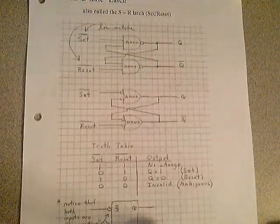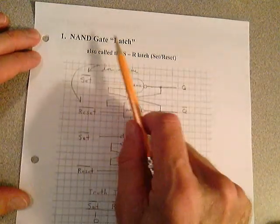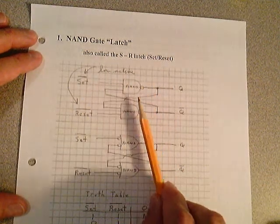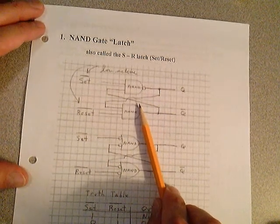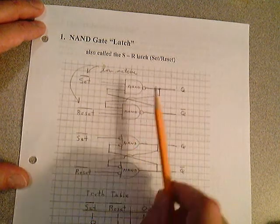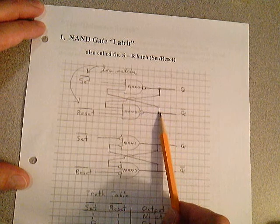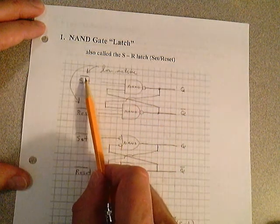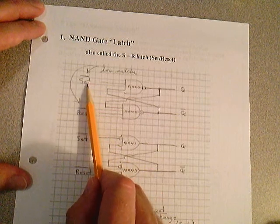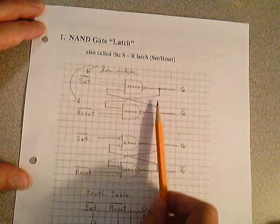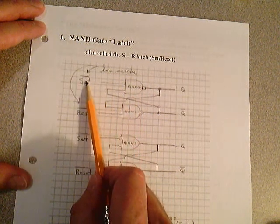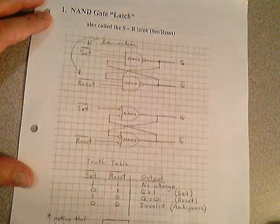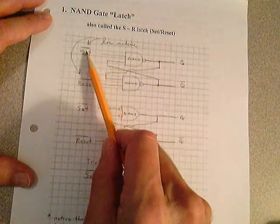Let's take a look at the NAND gate latch, the first flip-flop. The NAND gate latch is also referred to as the set-reset latch. This is the block diagram and this is the circuit diagram for how you construct the flip-flop. Notice it's just two cross-coupled NAND gates where the output of one NAND gate goes to the input of the lower one, and the output of the lower NAND gate feeds back to the input of the top one. It has a low-true set input and a low-true reset — these are low-active inputs.